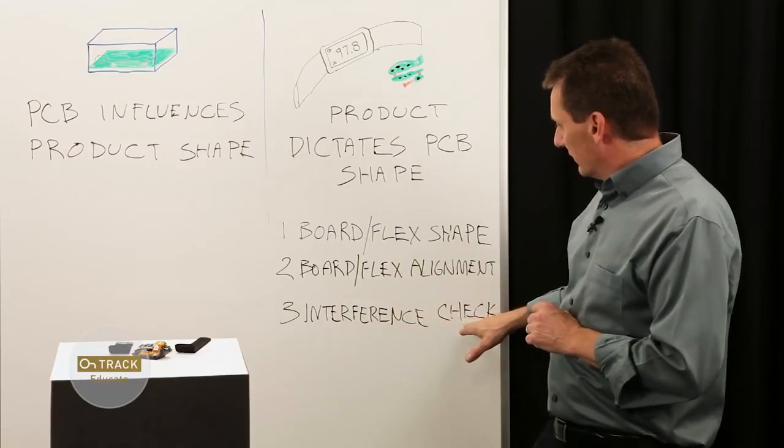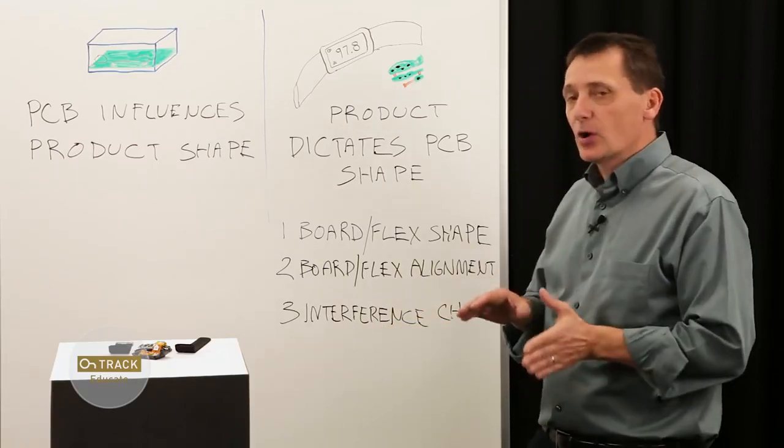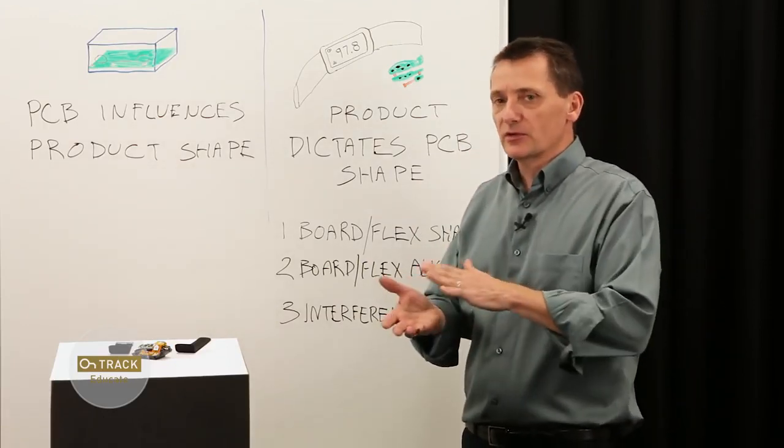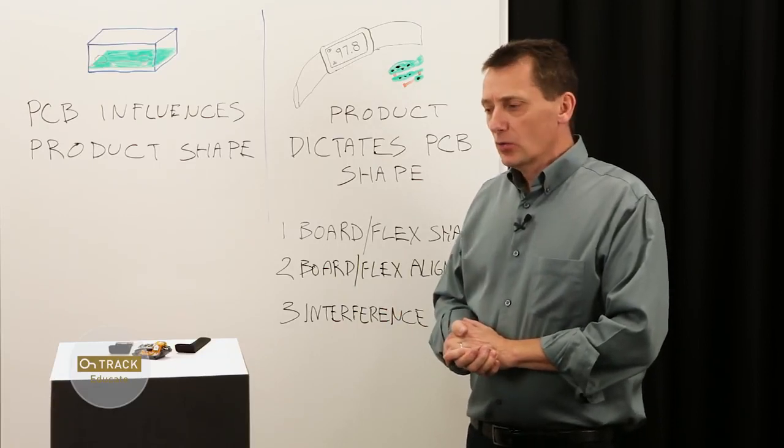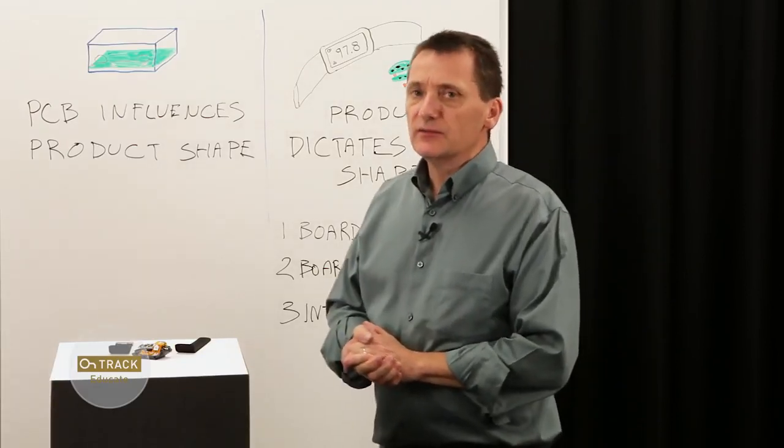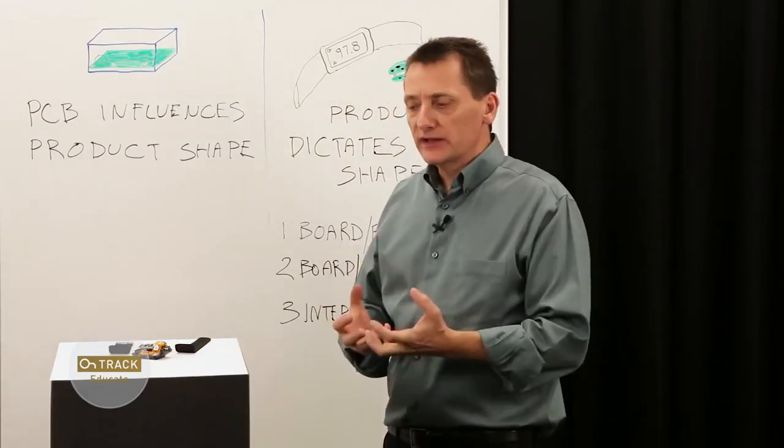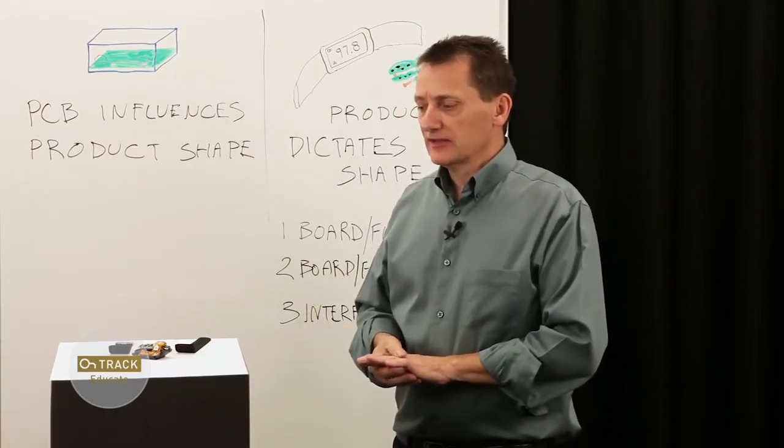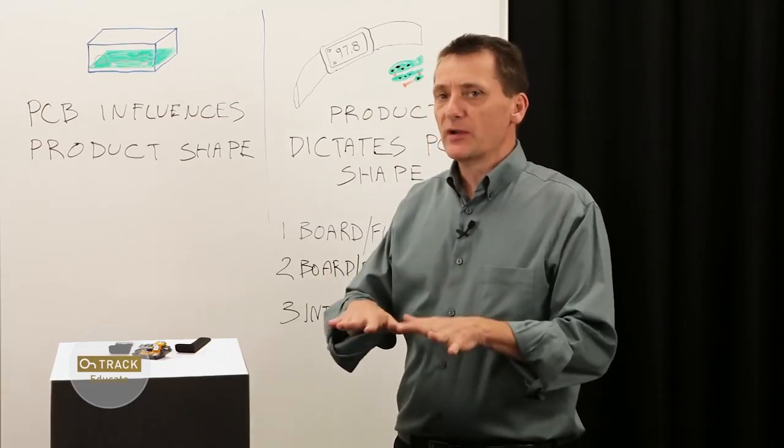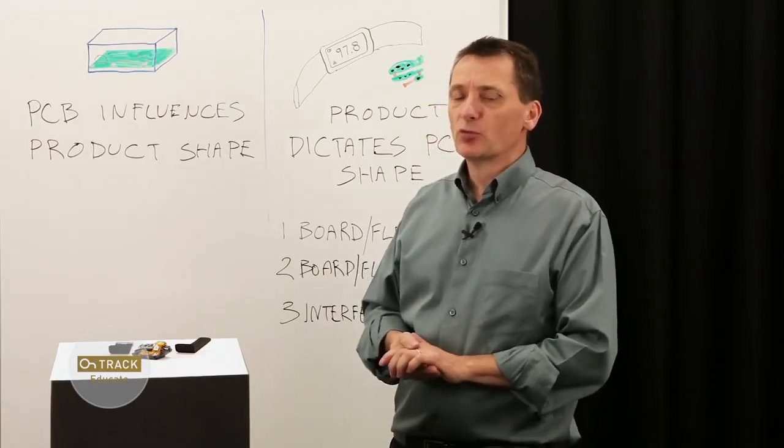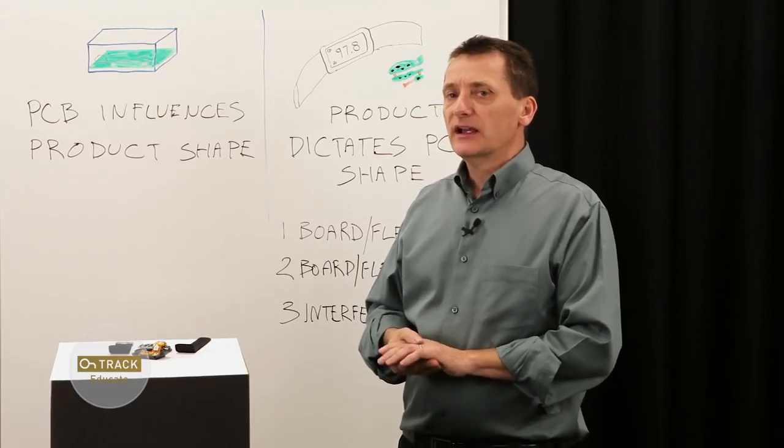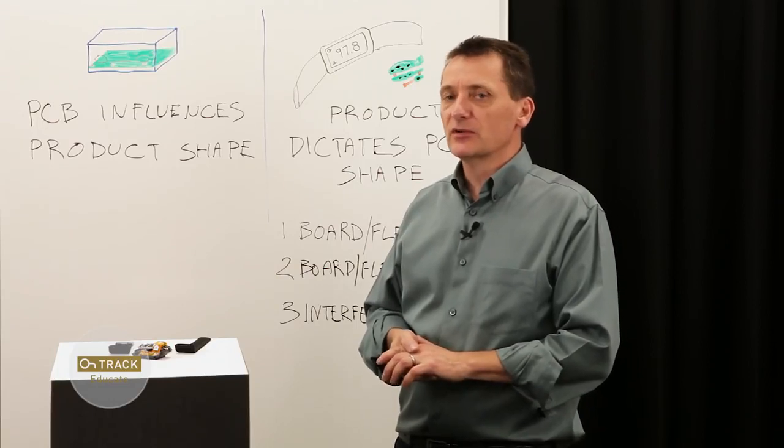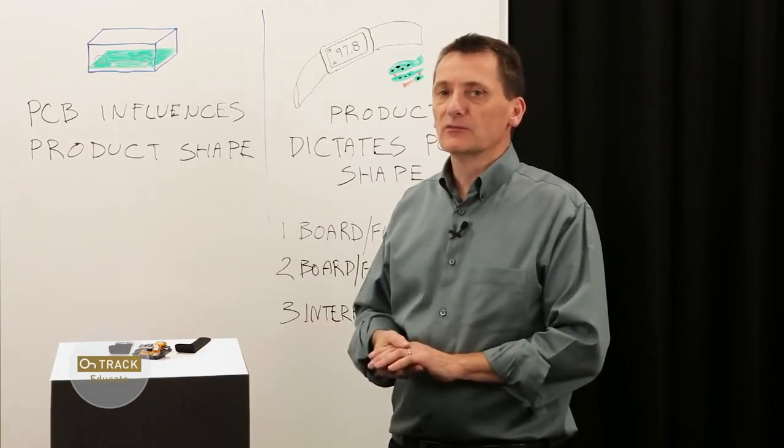And then you can worry about the third problem, which is interference checking of components that you're going to place on these boards and the other boards themselves interfering with each other or the enclosure. So once you have that mechanical data imported in, the PCB design process is just as it is, where you worry about placing components and you let your design rule checks take over and leverage that mechanical information as the DRC boundaries of where you can place components and where you can't.